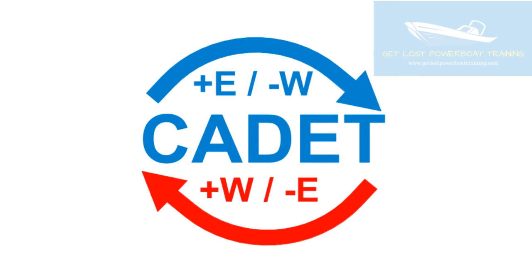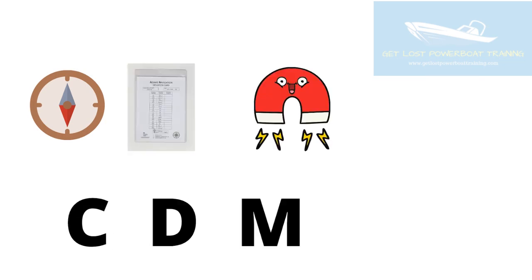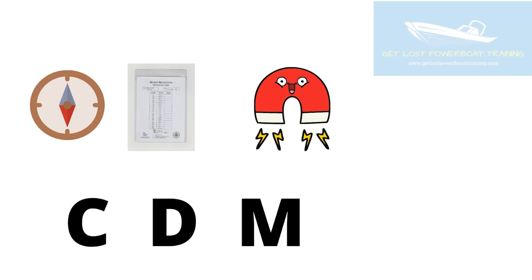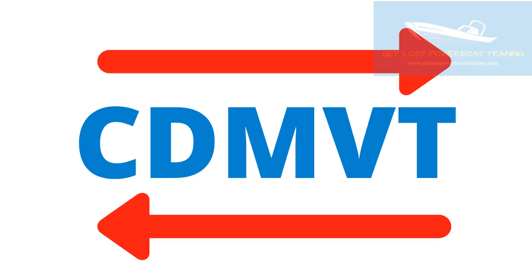We apply westerly deviation and easterly deviation in exactly the same way as we do for variation, so the CADET word still tells us the correct way to apply it. We need to make sure we apply the changes in the correct order. First, apply deviation — the compass correction — which gives us a magnetic heading. Once we've done that, we apply variation to give us a true heading. Going the other way, from true heading to compass heading, you apply variation to get a magnetic heading, then deviation to get your compass heading.